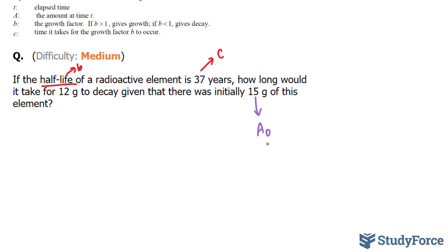And they're saying that 12 grams of this 15 decayed. This means that our final, which is represented by the letter big A, is 15 minus 12, so therefore we're left with only 3 grams. So how long will it take for 15 grams to become 3?